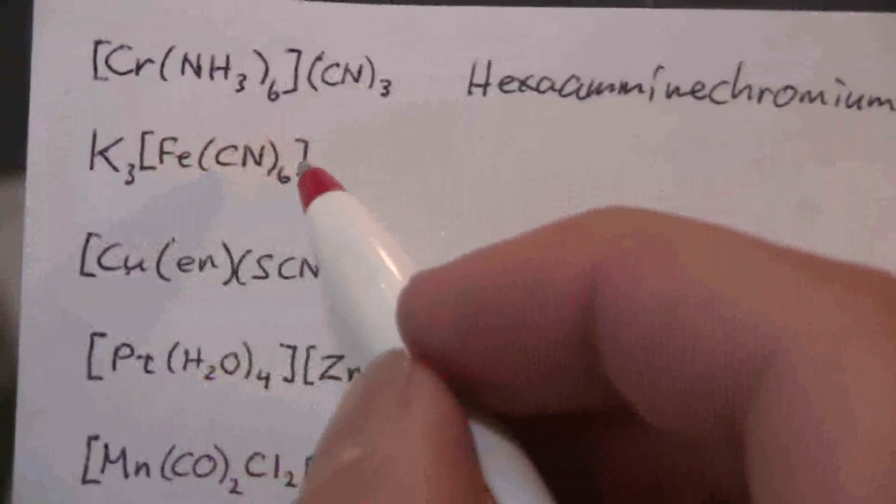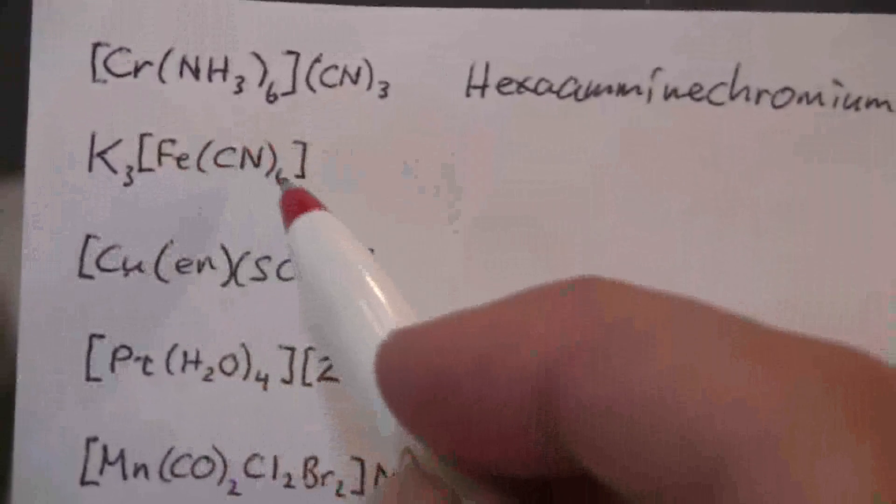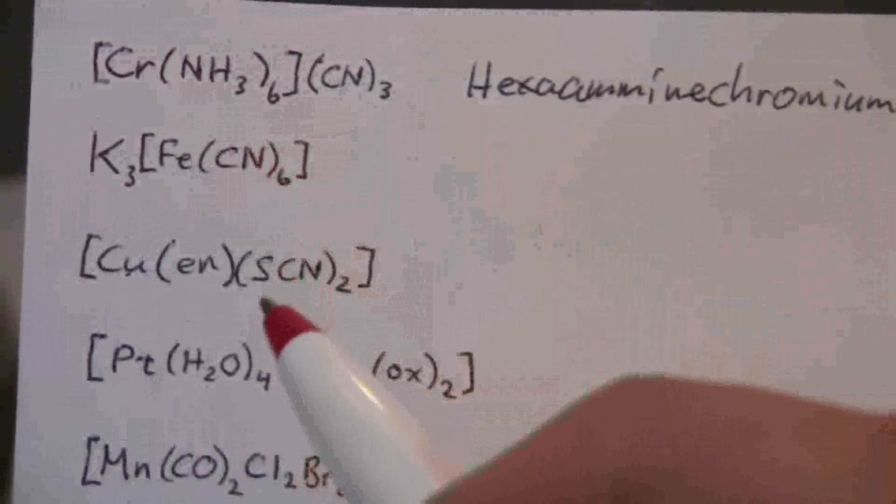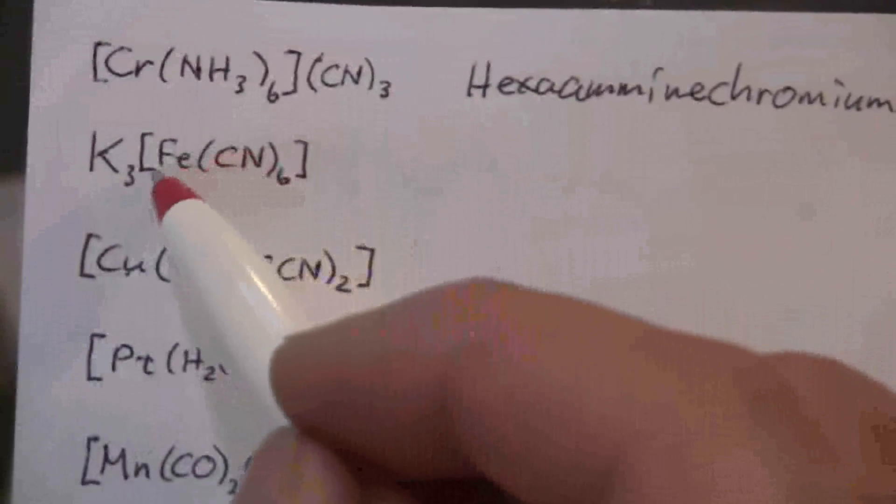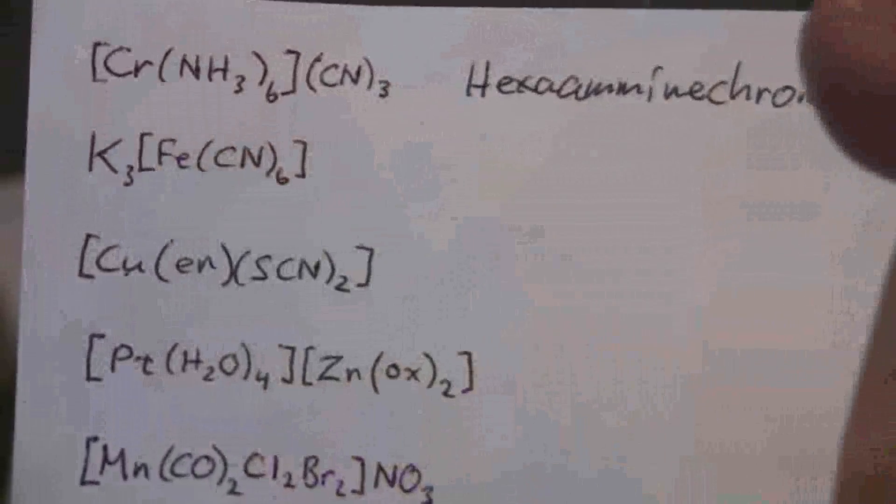All right, so if this is a negative 3, what is the charge of the iron? Well, we have a negative 6 from those 6 cyanides, each is a negative 1, so it must be plus 3, so that plus 3 minus 6 gives us the negative 3.